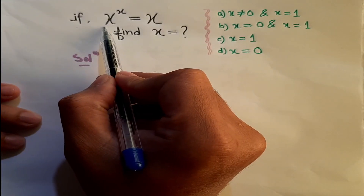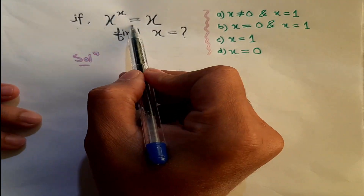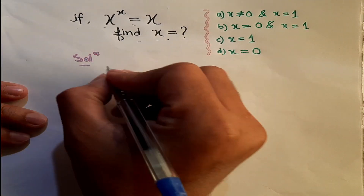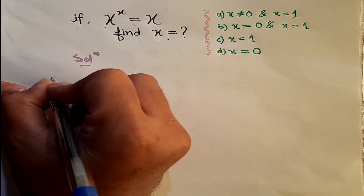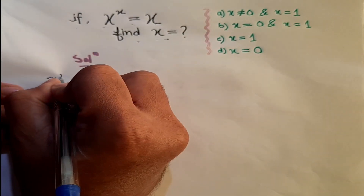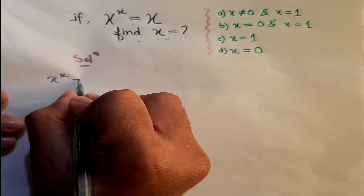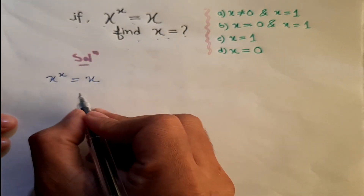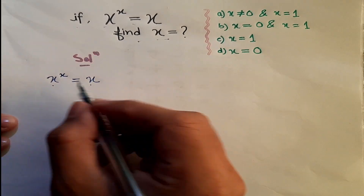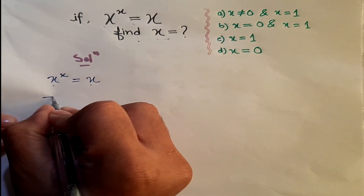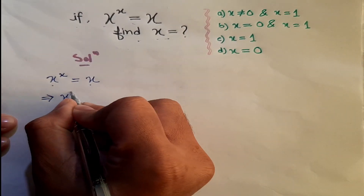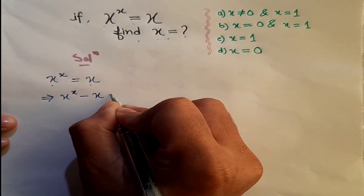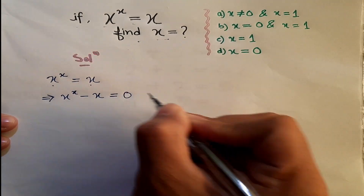Given the question: if x to the power x is equal to x, we need to find the value of x. First, we write the expression x to the power x equals x, then bring everything to the left-hand side: x to the power x minus x is equal to 0.